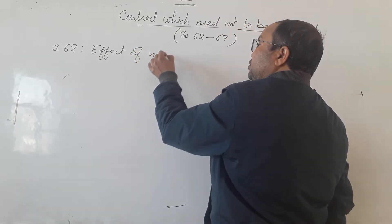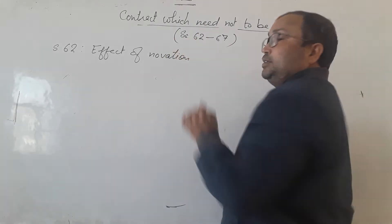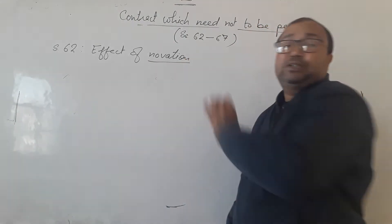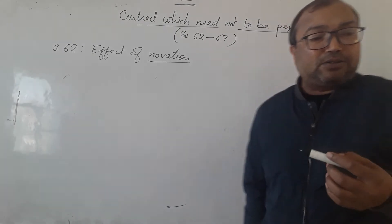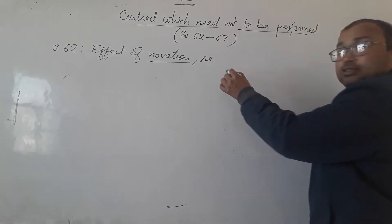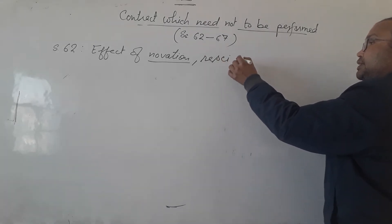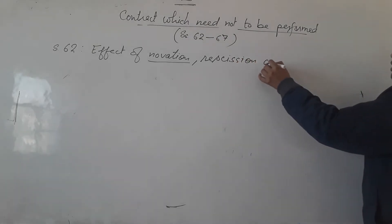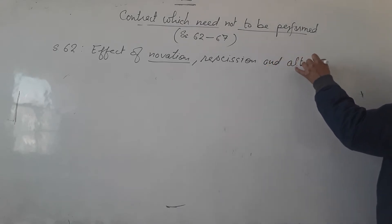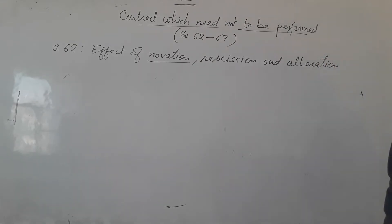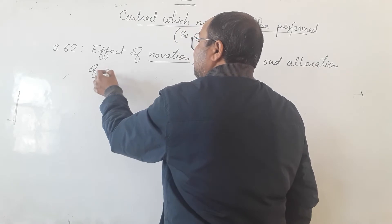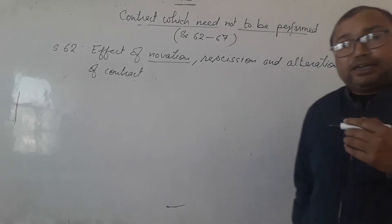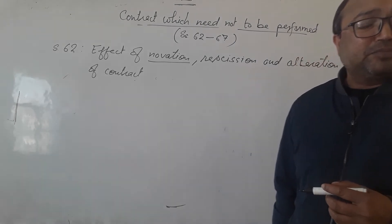Section 62 deals with the effect of novation, rescission, and alteration. The question often comes directly asking about novation — what is novation? So we need to understand the effect of novation, rescission, and alteration.